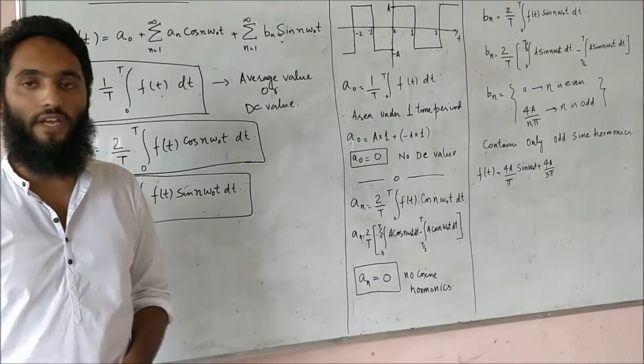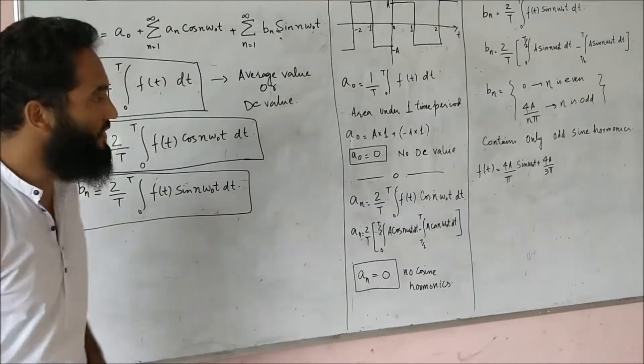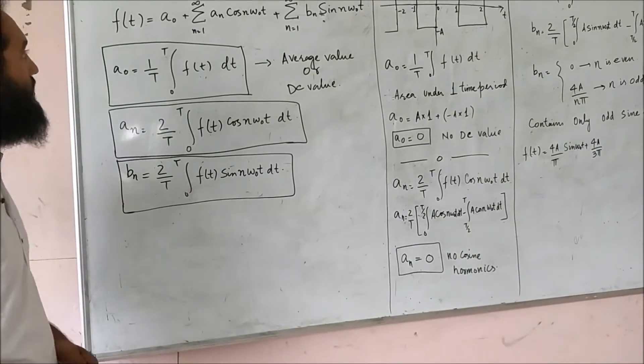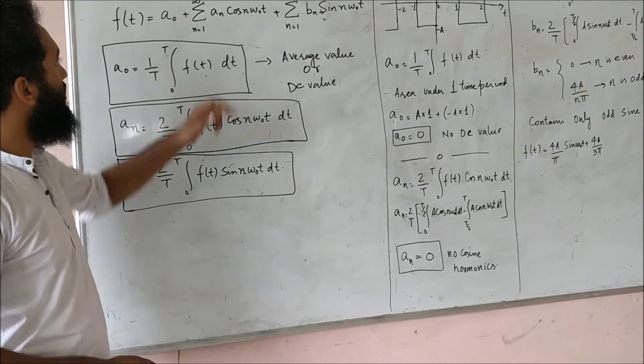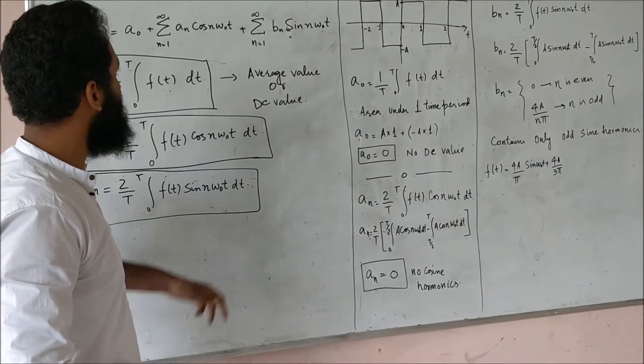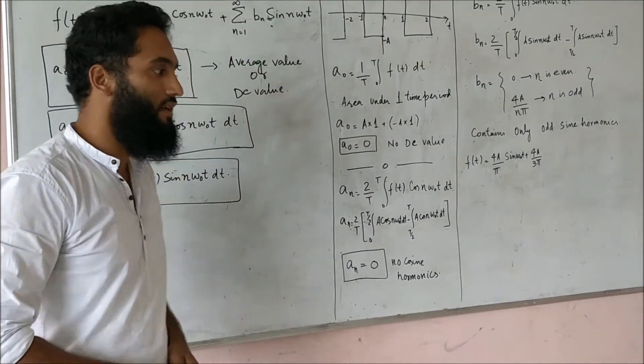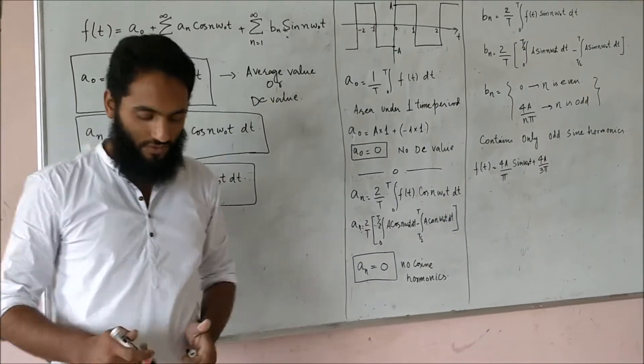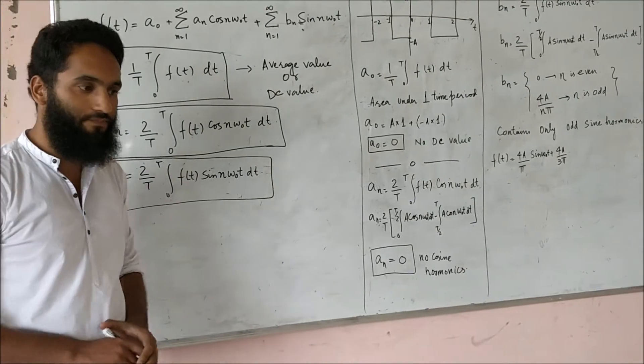First we will understand what actually Fourier said. The Fourier statement was: any function can be written as a sum of constant terms and summation of some weightage of cosine harmonics and some weightage of sine harmonics. This was a mathematical statement and as electrical engineers we are going to interpret it in a very different way.